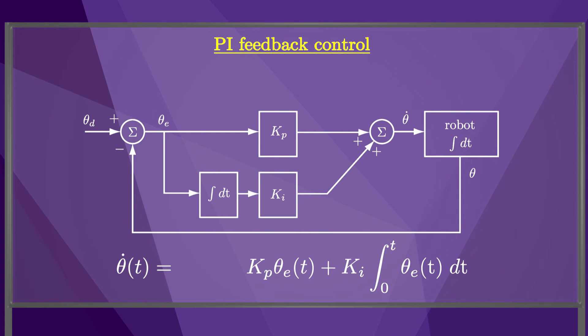A PI control system can be visualized as a block diagram, as shown here. The actual position is subtracted from the reference position to get the error, and this error is multiplied by the gain Kp, and integrated and multiplied by the gain Ki.